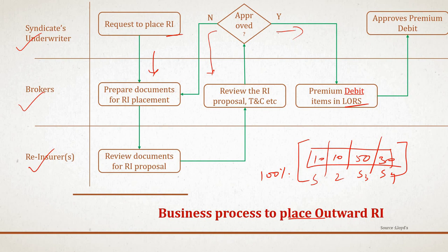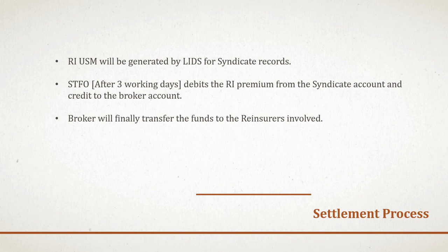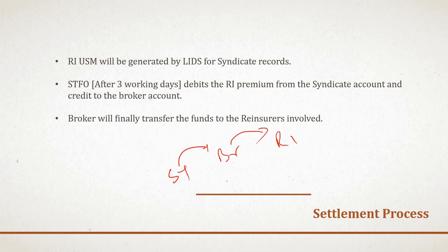Once the broker creates the debit entry in LORS, it goes to the syndicate for approval, closing the process. After agreement, the LORS item is completed and sent to XIS LIDs to generate the RIUSM, which is sent to the syndicate the following morning and triggers central settlement. After three working days, the STFO (Lloyd's Settlement Trust Fund Office) debits the premium from the syndicate and credits it to the broker account, and the broker pays the premium to the reinsurer — with the broker playing a central intermediary role.